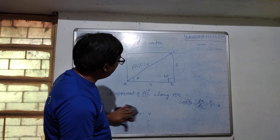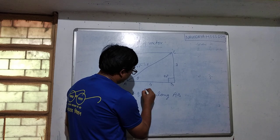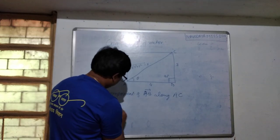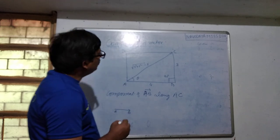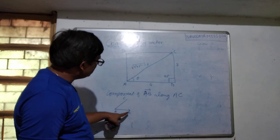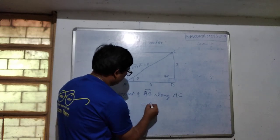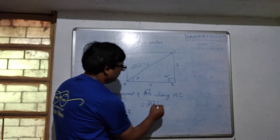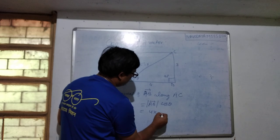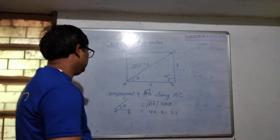Now, what is the component of AB vector along AC vector? Our vector is AB and we want the component along AC. AB is making angle theta with AC, so the component is AB × cos theta. AB is 4 and cos theta is 0.8, so 3.2 will be the component of AB along AC.